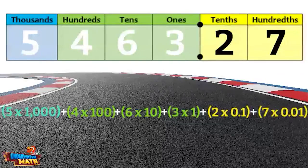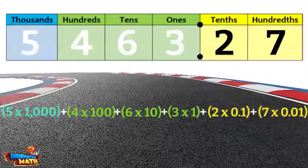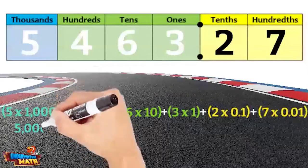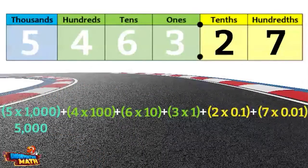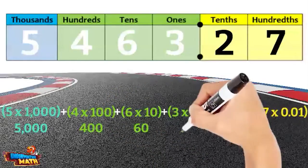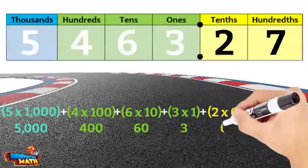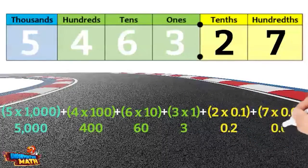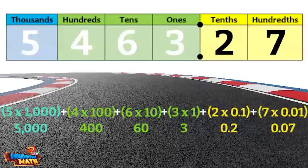Now let's take a look at the value of each digit. The expanded notation can help us find the value of each digit. We just need to find the products. Five times one thousand equals five thousand. Four times one hundred equals four hundred. Six times ten equals sixty. Three times one equals three. Two times one tenth equals two tenths. And seven times one hundredth equals seven hundredths. And now we have our expanded form.